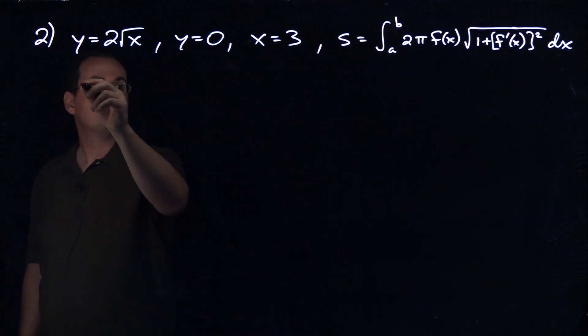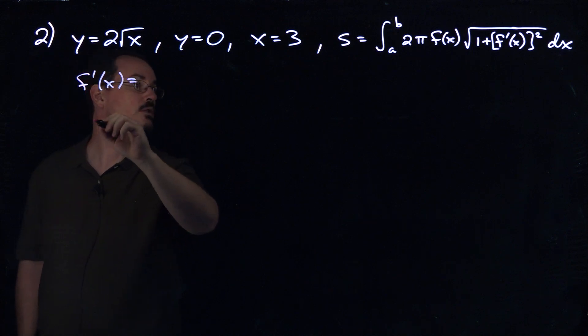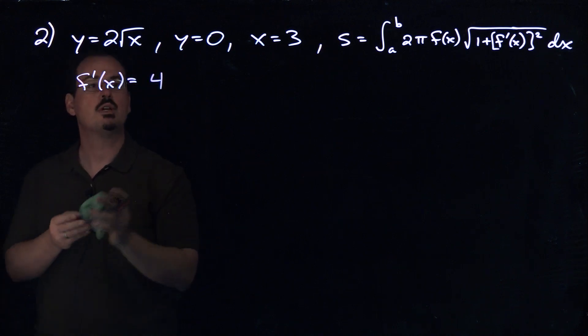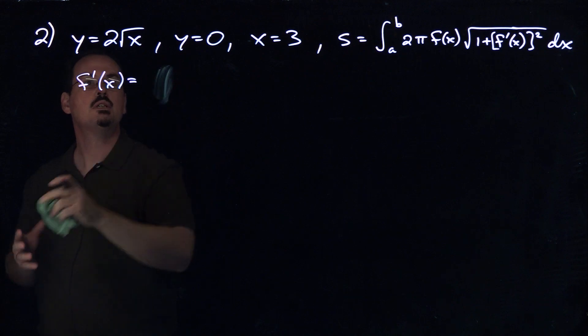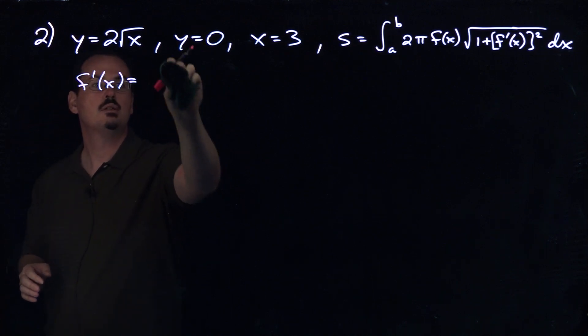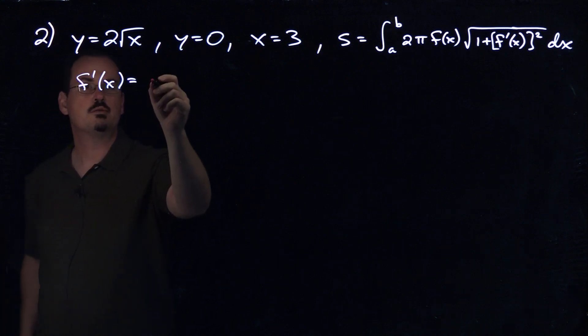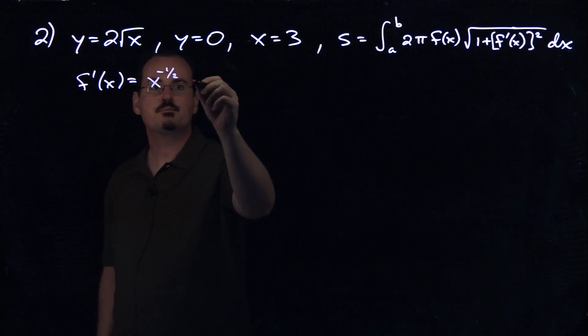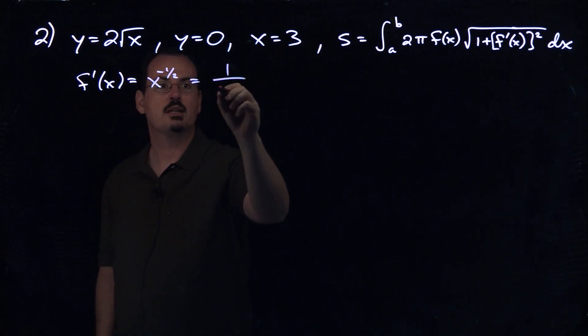Okay, so we need to find f prime of x to make this work. So f prime of x is equal to, let's see, that's 2x to the 1 half, so we're going to get 4x, or sorry not 4x, 1 half times 2 is 1, right? So f prime of x is equal to just x to the negative 1 half, or 1 over the square root of x.